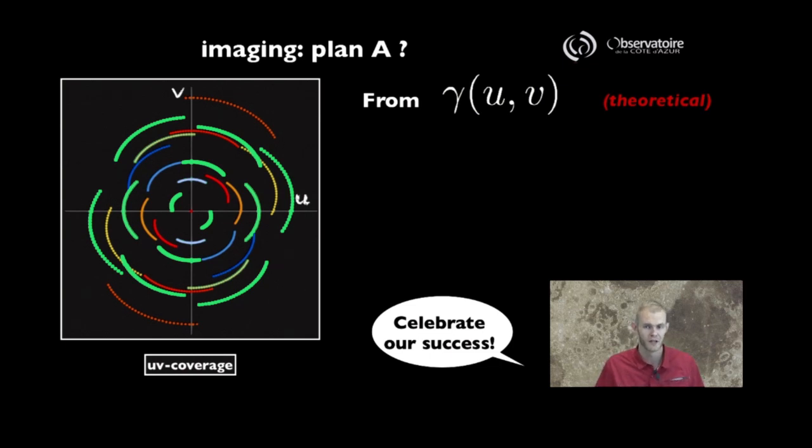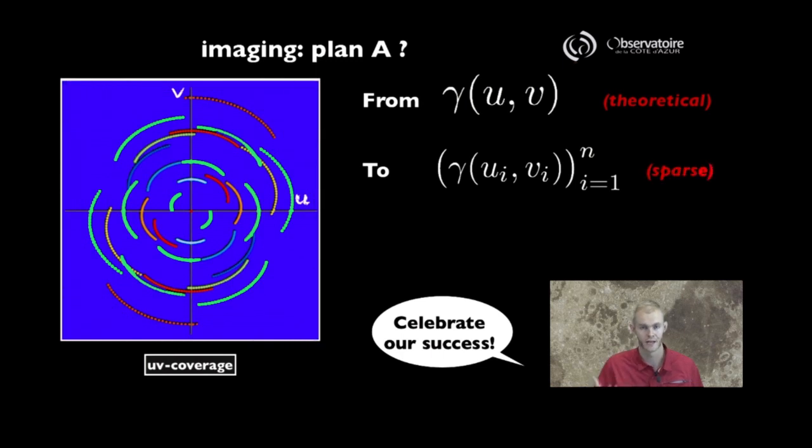Indeed, despite our best effort, there is a difference between the theoretical complex visibility function in gamma and the actual measurements we can get access to. Despite our best efforts and the fact that we've acquired many, many points, you have to realize that those points do only cover a very small fraction of the surface area that this entire UV plane actually represents. And the data that we have is actually quite sparse.